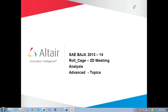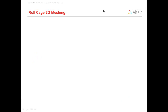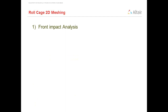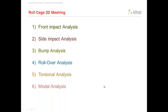Welcome to Altair Engineering training and support. In this video I am going to show you how to perform analysis on a 2D mesh roll cage structure where you have created the mesh model. We are going to discuss how to perform front impact analysis, side impact analysis, bump analysis, rollover analysis, torsional analysis, and modal analysis. These six analyses we are going to perform in the same file, or you can divide them into different folders and run the analysis.